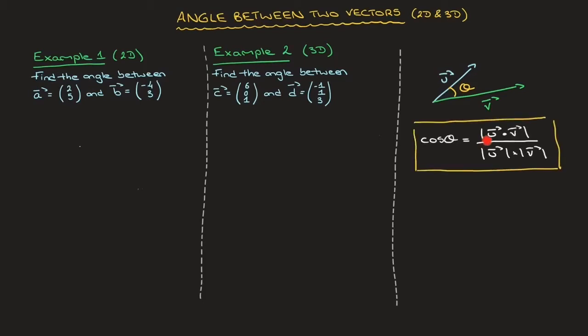Notice that on the numerator, we've written the dot product u dot v inside an absolute value. The reason we do this is to ensure that we obtain the acute angle between the two vectors. If we don't use an absolute value, there's a chance that the angle we obtain will be the obtuse angle.